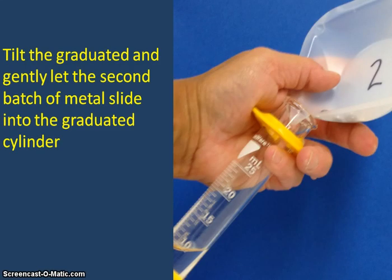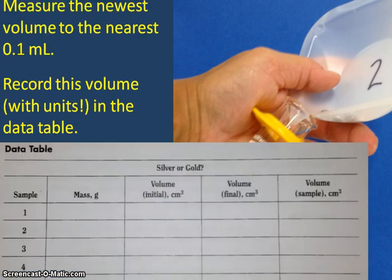You will then tilt the graduated cylinder and gently let the second batch of metal slide into the graduated cylinder without too much splashing. You will measure this new volume to the nearest tenth of a mL and record this volume with units in the data table under the final volume column next to sample number two.